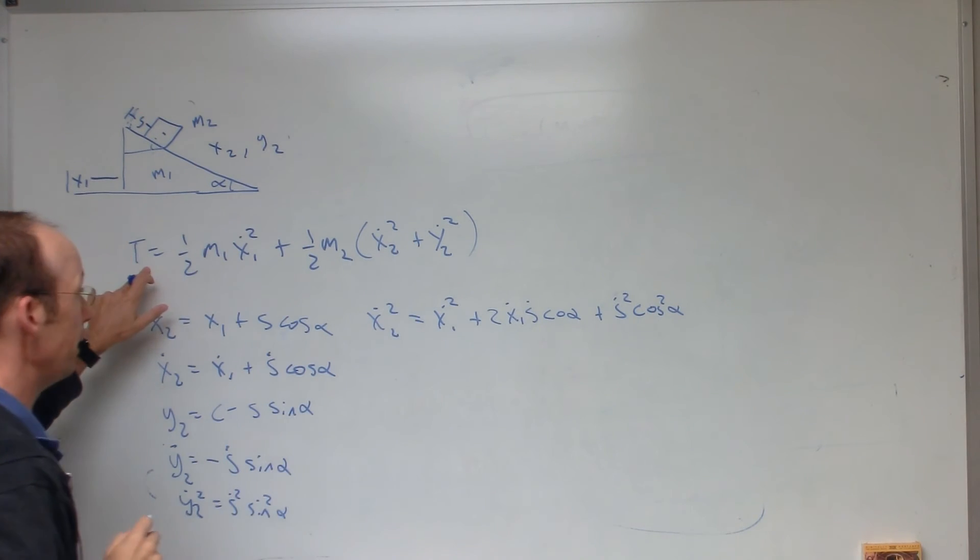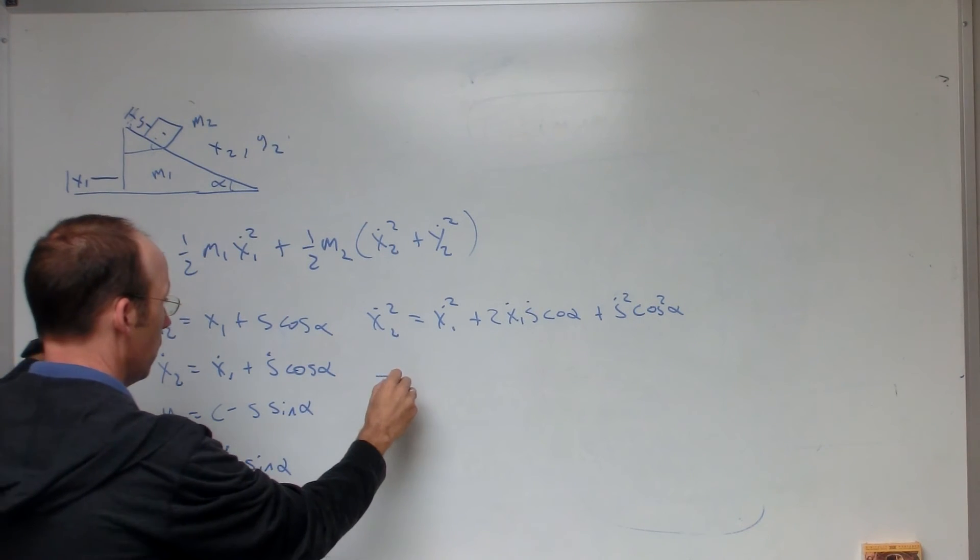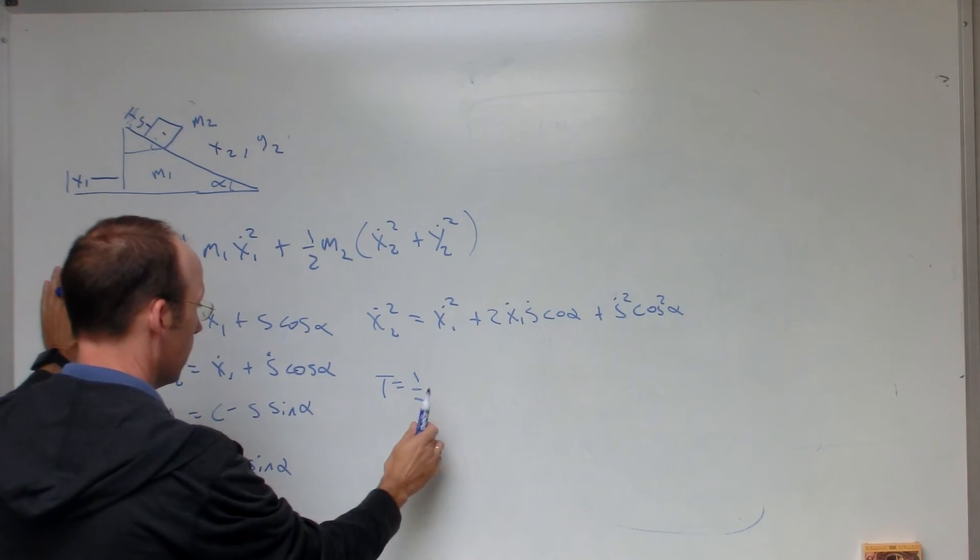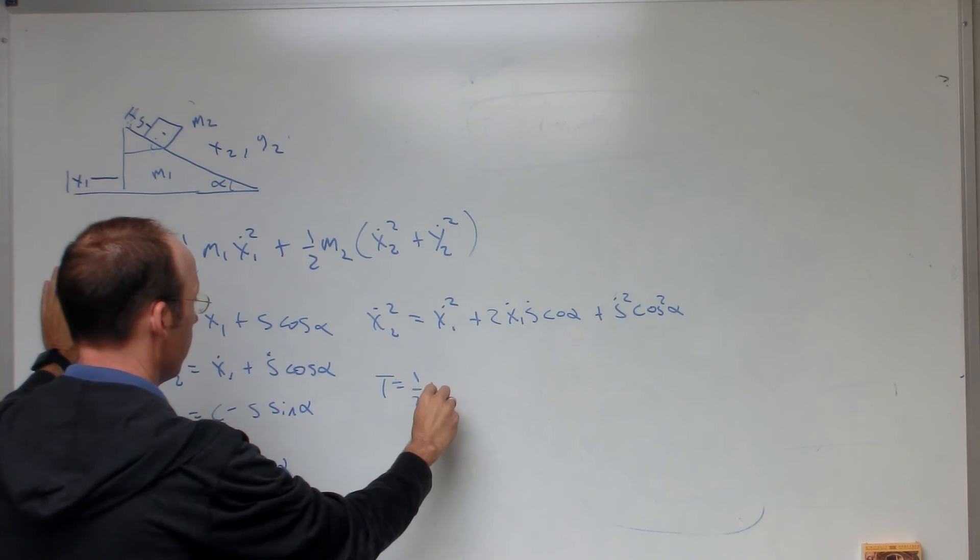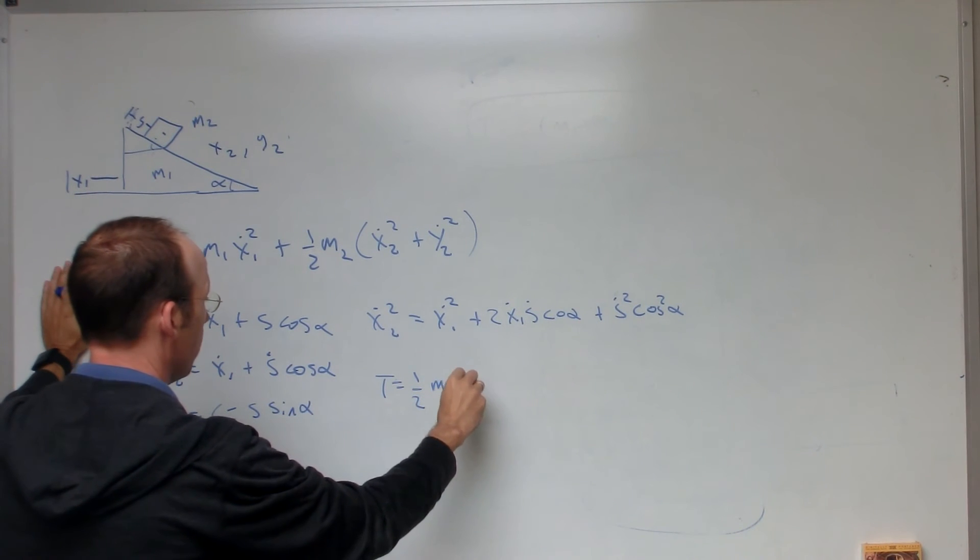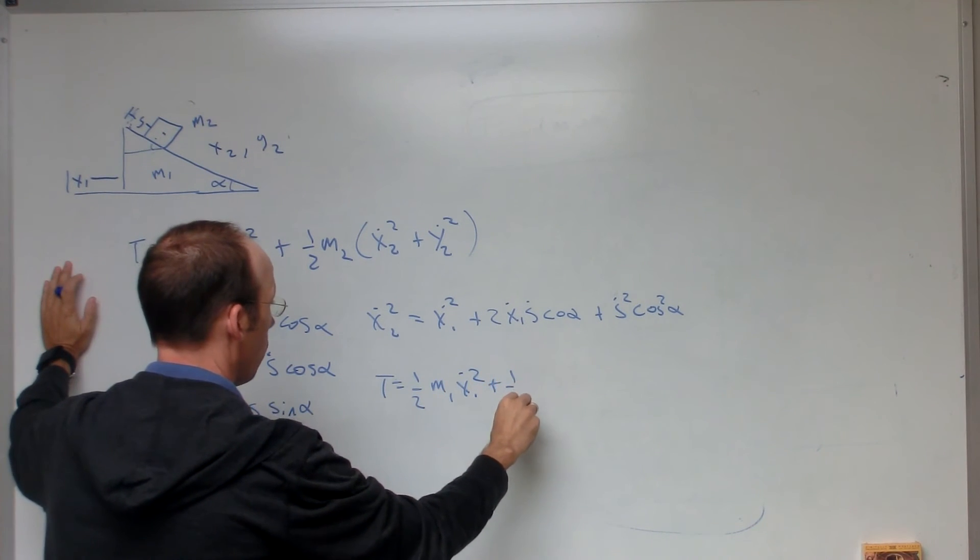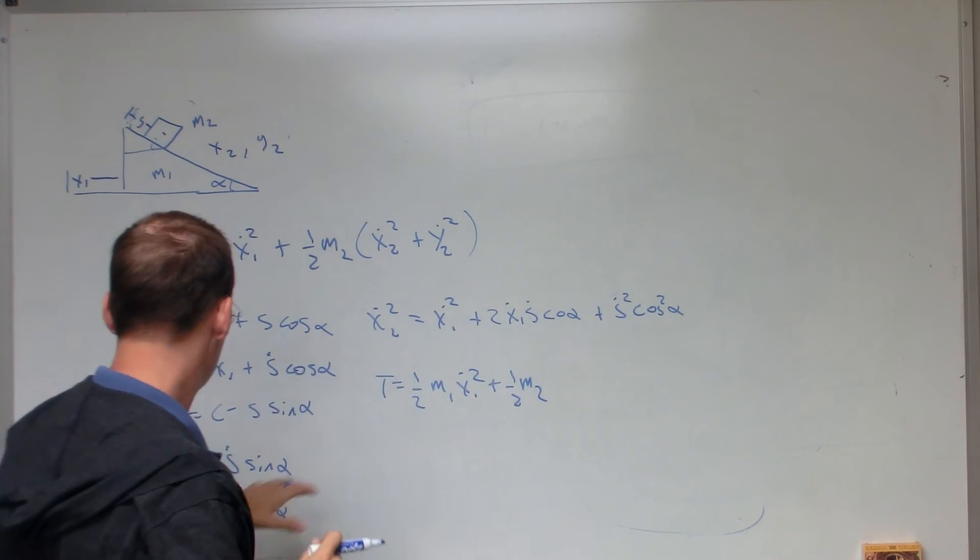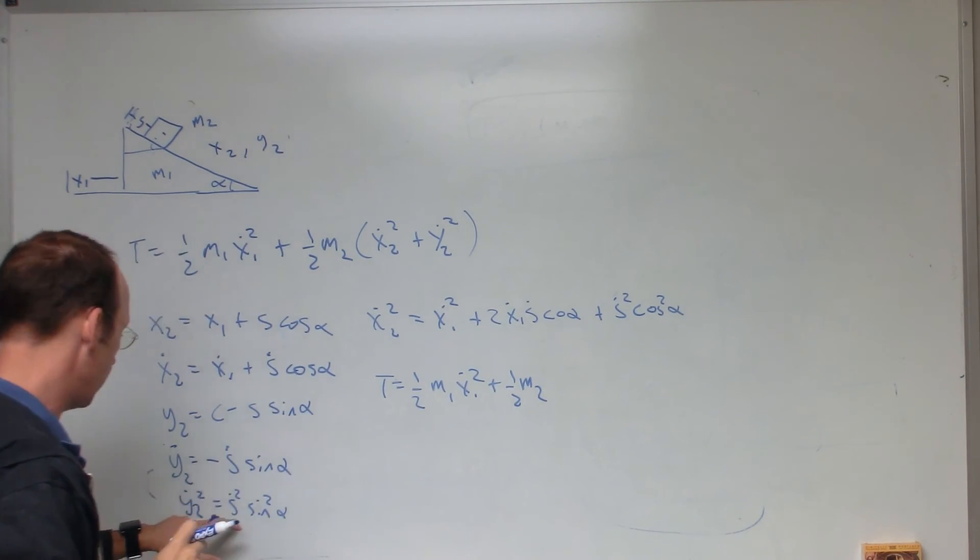So, now let me write the kinetic energy term. T equals one half, I thought I had more time, one half m1 x1 dot squared, plus one half m2. Now, I have this, plus that. But, let me just go ahead and see.